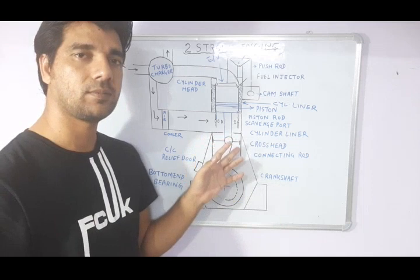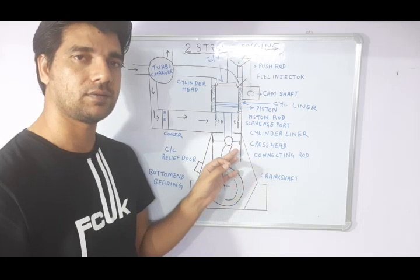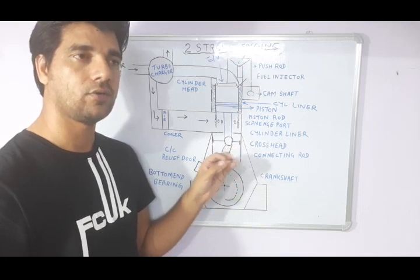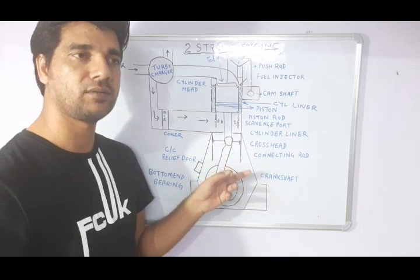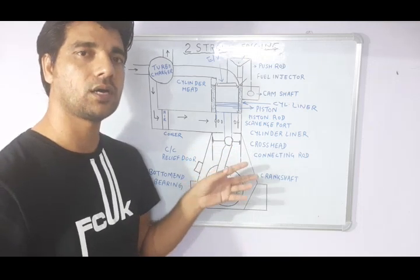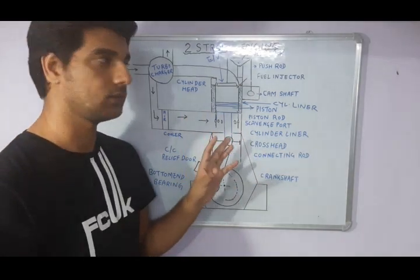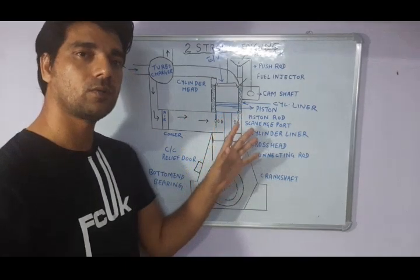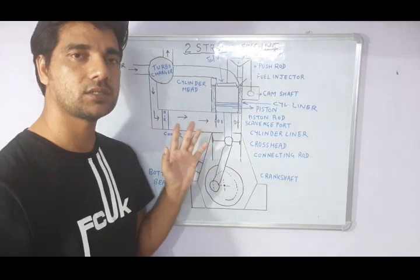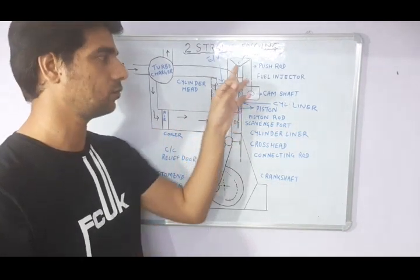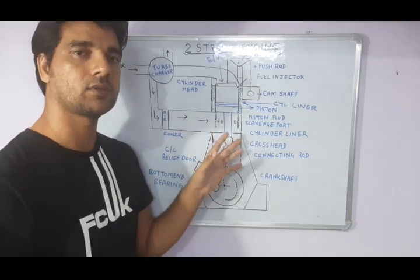Three shafts are connected: the tail shaft, intermediate shaft, and crankshaft of the main engine — you can call it the main shaft also. The main shaft is connected to the intermediate shaft, the intermediate shaft is connected to the tail shaft, and the propeller is mounted on the tail shaft. So this engine is used for the propulsion purpose. We must know what components are used in this engine and their functions, going from top to bottom.